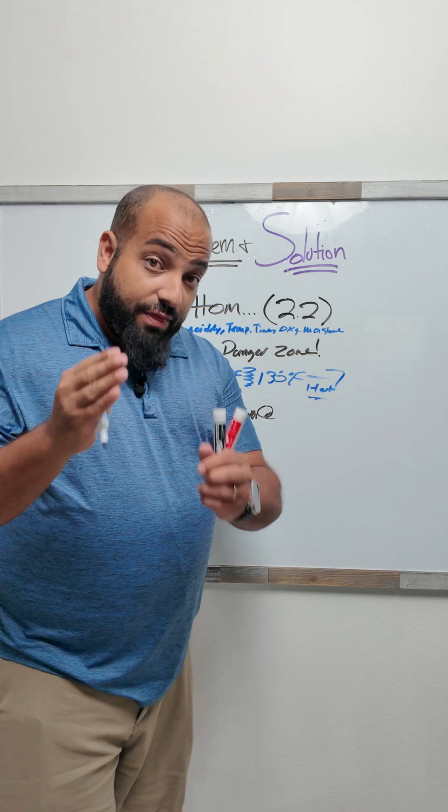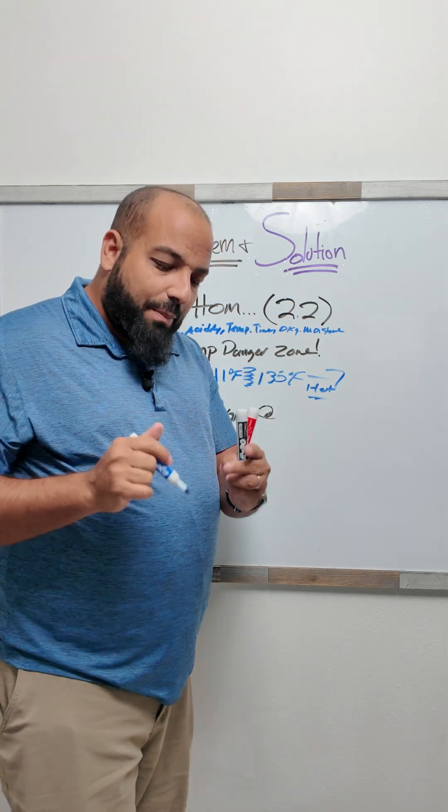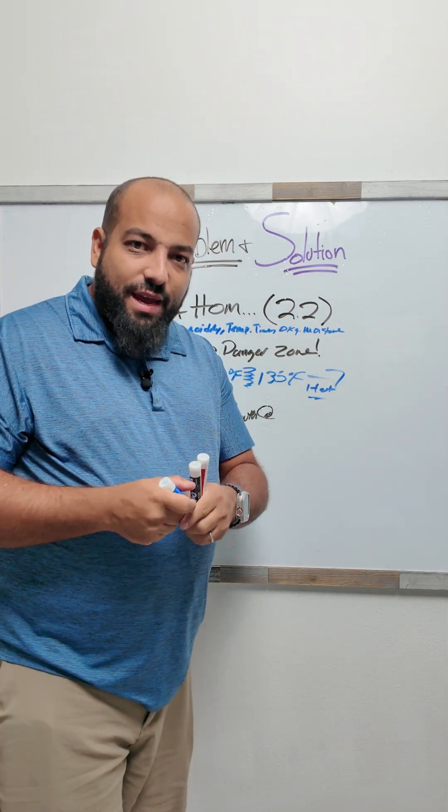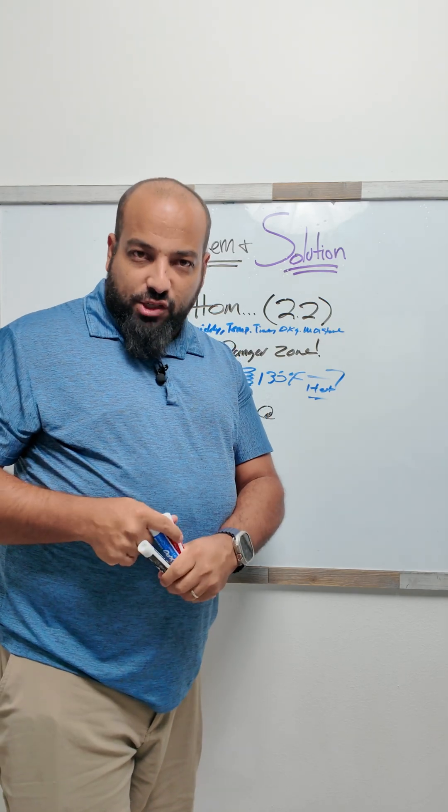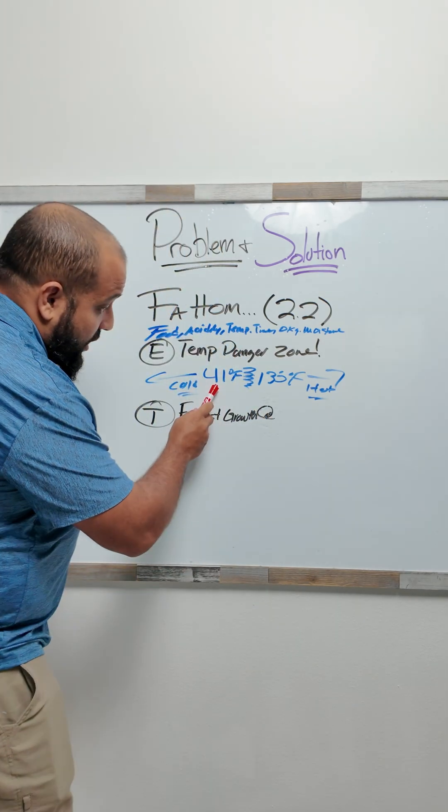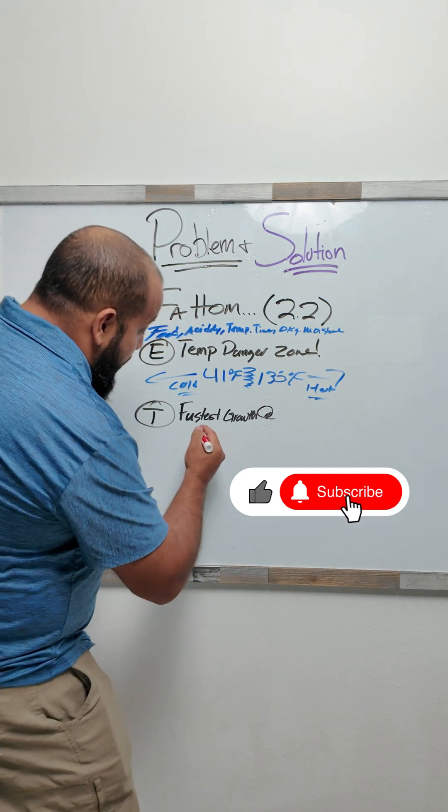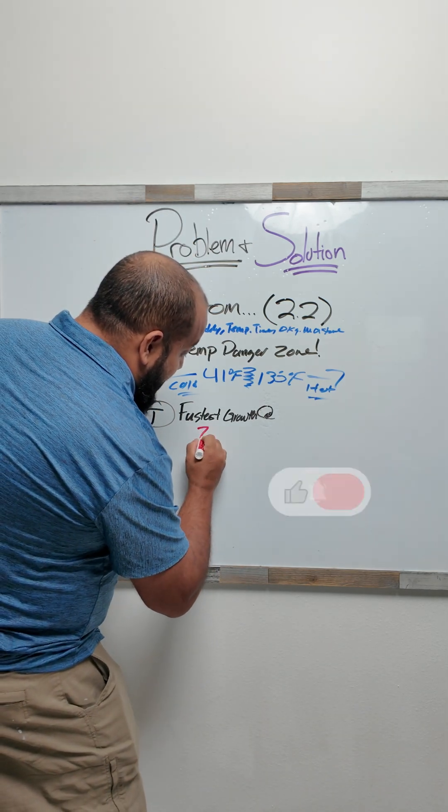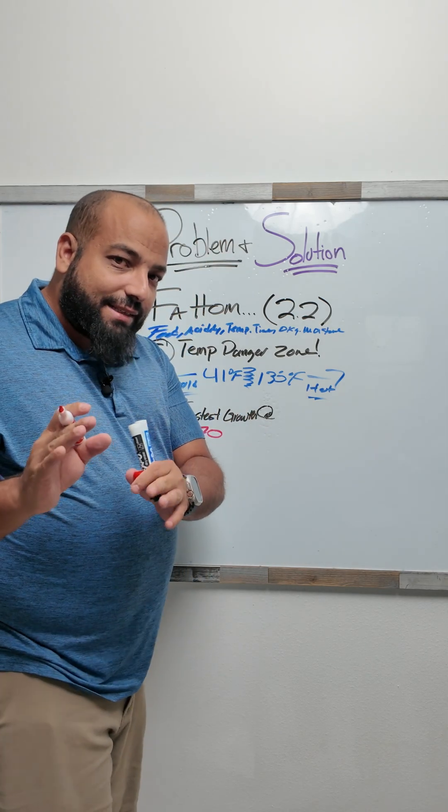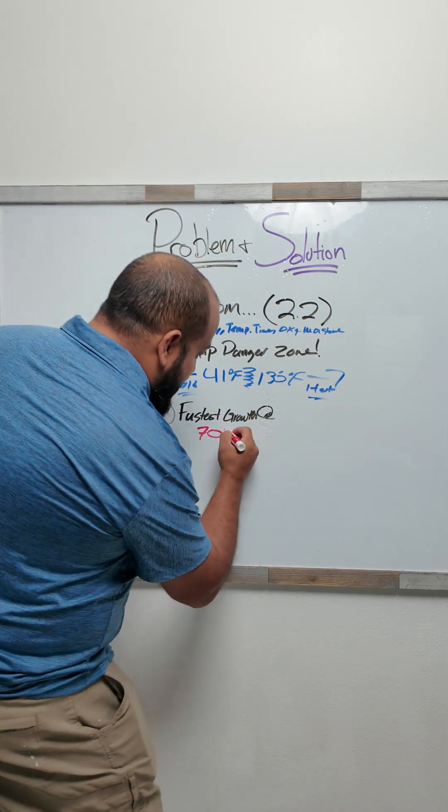And speaking of bacteria, they're going to try to speed it up by giving you an answer you might think is the correct answer. But no, what they're actually looking for here is 41 to 135 degrees Fahrenheit. What you want to stay away from is the fastest. This answer is not incorrect, it's just not the right answer on the test.